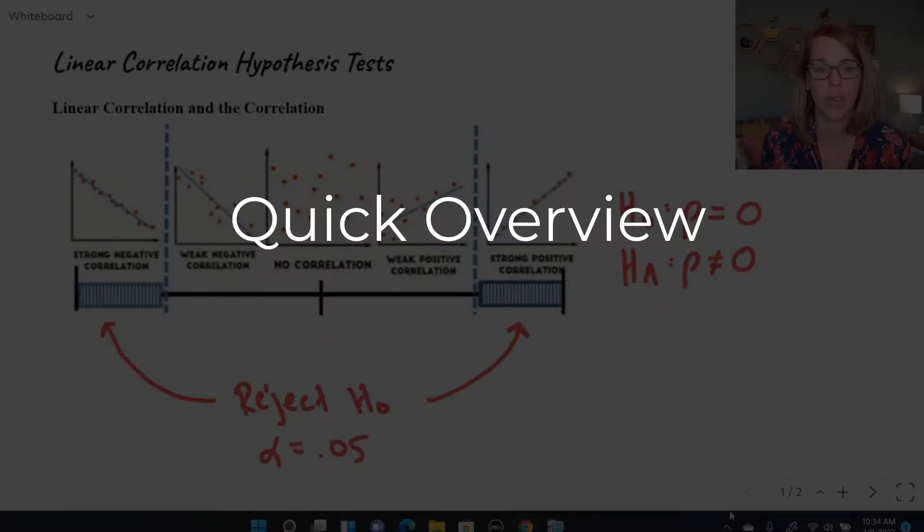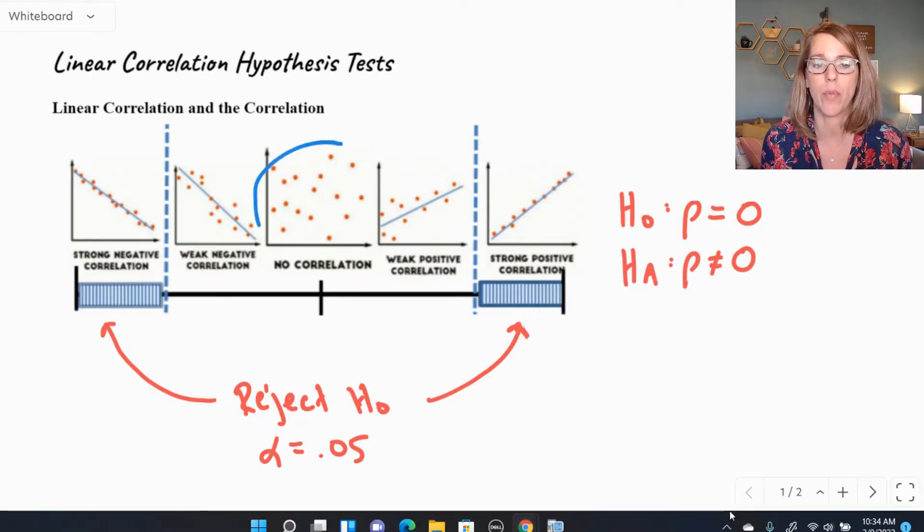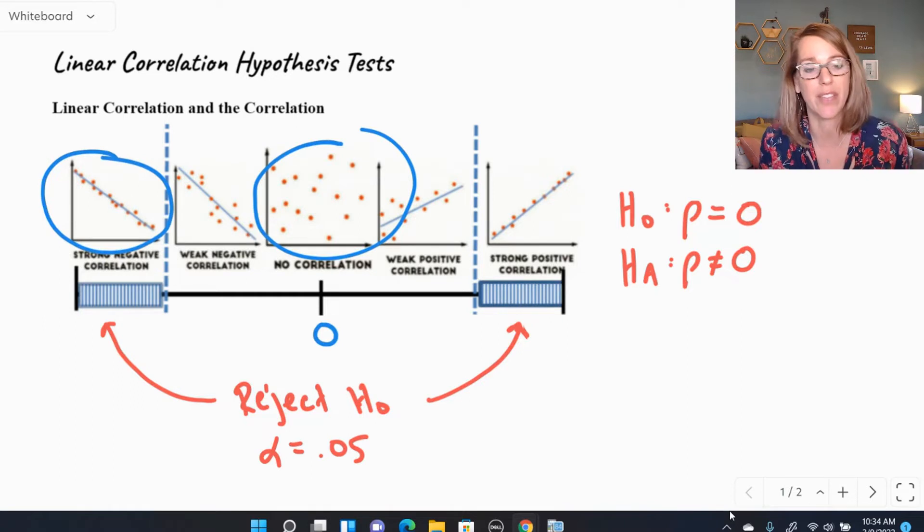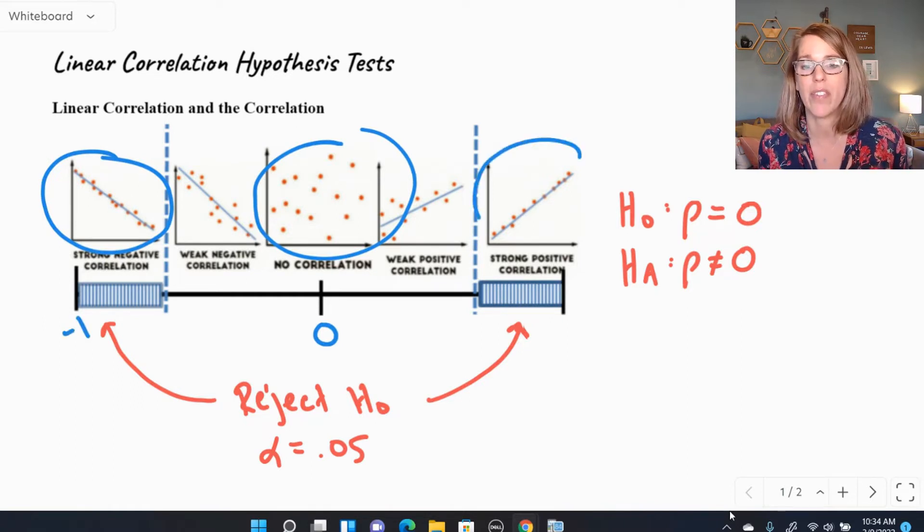First of all, just a really quick overview. As I'm looking for a correlation, if I've got a scatterplot like the one in the middle here, I've got no correlation. This gives me a Pearson correlation coefficient of zero. If I have a strong negative correlation, which means that the dots line up with a negative slope, we're looking at a correlation coefficient of negative one, and then a strong positive is a correlation coefficient of one. It's going to range somewhere in between negative one and one.